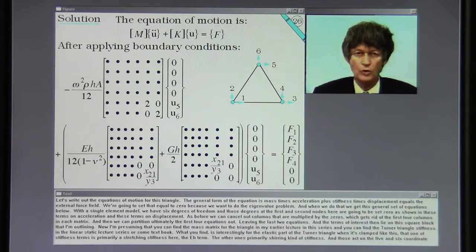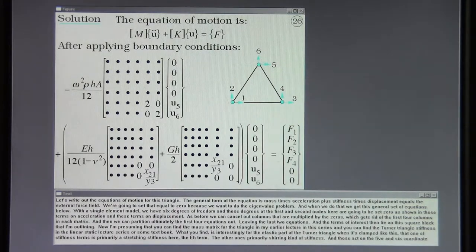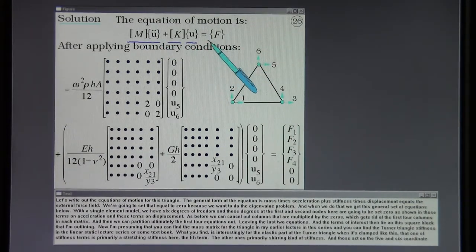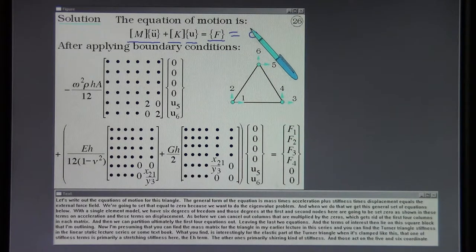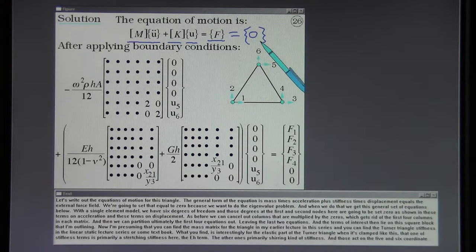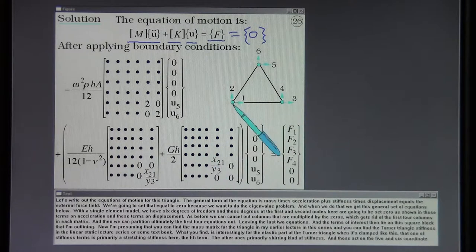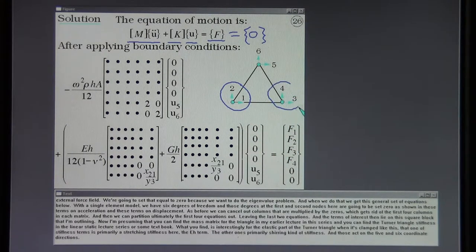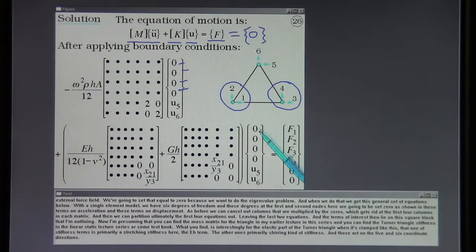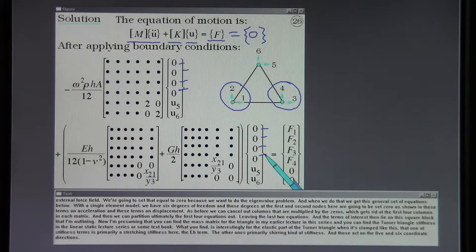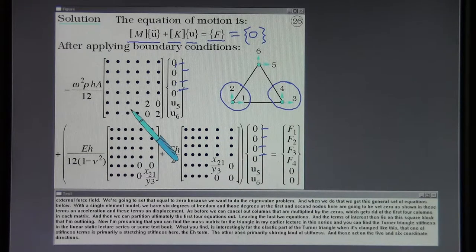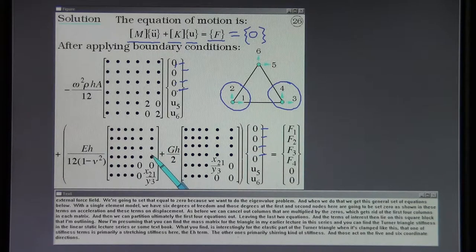Let's write out the equations of motion for this triangle. The general form of the equation is mass times acceleration plus stiffness times displacement equals the external force field. We're going to set that equal to zero because we want to do the eigenvalue problem. When we do that, we get this general set of equations below. With a single element model, we have six degrees of freedom and those degrees at the first and second nodes are going to be set zero as shown in these terms on acceleration and these terms on displacement. As before, we can cancel out columns that are multiplied by the zeros, which gets rid of the first four columns in each matrix. Then we can partition ultimately the first four equations out, leaving the last two equations.